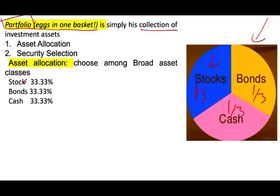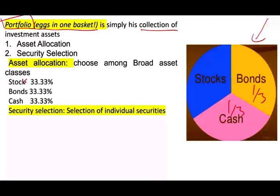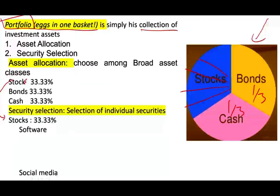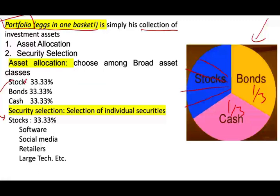Once we have the asset allocation, let's talk about security selection. What is security selection? Within the stock portion — for example, that 33% — we have to figure out the different types of stocks we want to invest in. Do we want to invest in software companies, social media like Facebook and Twitter, retailers, large tech, small tech, medium-sized companies, international, real estate, and so on? The same applies to bonds. Asset allocation is looking at the overall picture; security selection is looking to invest in a specific stock.